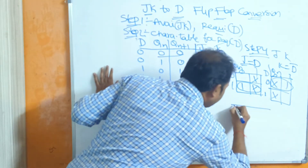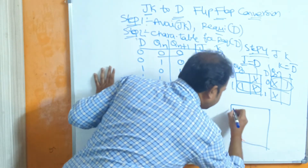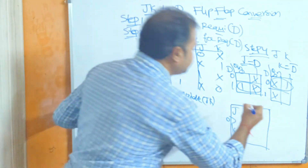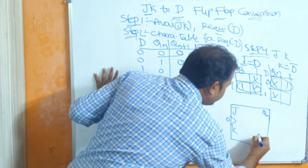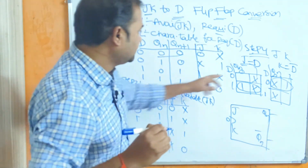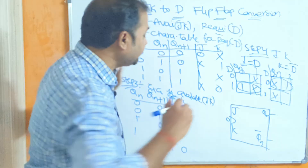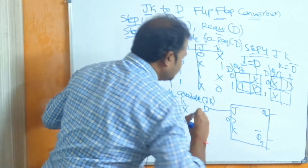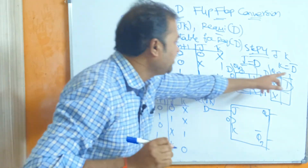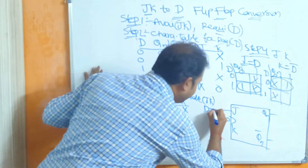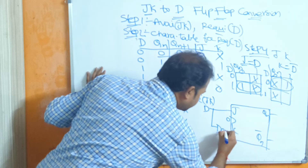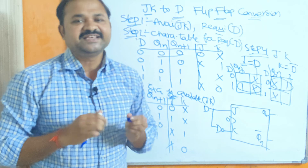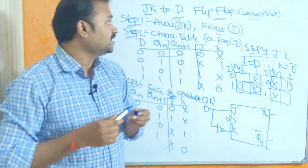Now we have to draw the circuit diagram. The available flip-flop is JK. This is the clock pulse, and the outputs are Qn and Qn-bar — the actual output and complemented output. J receives input from D, and K means D-bar, so we have to complement the D input. This is the circuit diagram, and in this way we can convert JK to the D flip-flop.